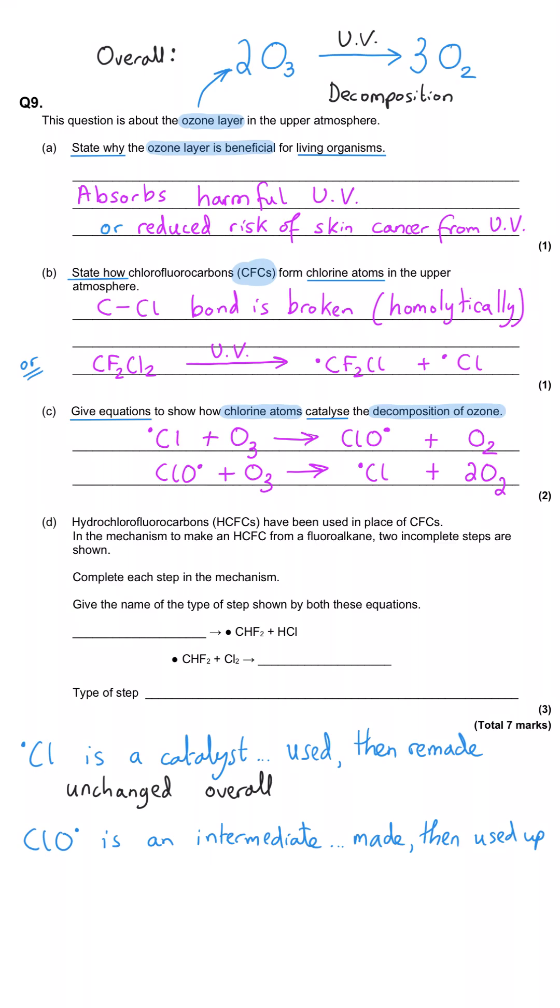And so overall, those two equations add together to give the O3 turns into O2 equation that I've drawn at the bottom. And we can see that because if you were to add these two equations together, like a simultaneous equation, we'd be able to simplify out all of the free radicals because they would both appear on either side of the expression and they'd simplify out.